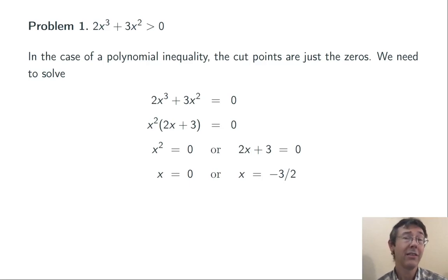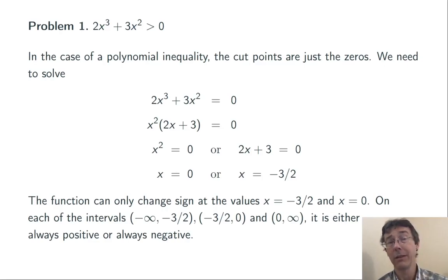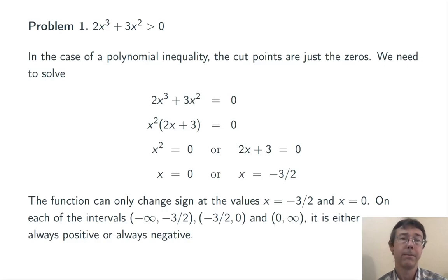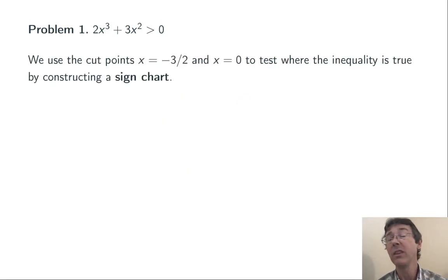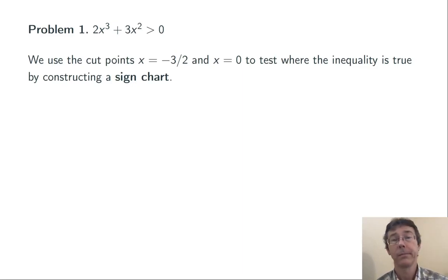The function on the left-hand side of that inequality can only change sign at these values. So from negative infinity to negative three halves, it's either positive throughout the entire interval or negative throughout the entire interval. Similarly, for the intervals negative three halves to zero, and zero to infinity. So I'm going to pick a point from each one of those intervals, plug it into the function, and see if I get a positive or a negative. That will tell me whether the function is positive or negative on the entire interval. I'm going to keep track of my results using a sign chart, which is just a number line with the cut points labeled.